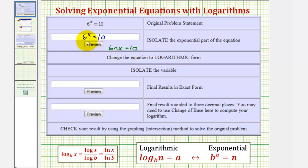Once we've isolated the exponential part, we're going to write the exponential equation as a log equation using our definition here by identifying the base, the exponent, and the number. Notice for our exponential equation, the base is 6, the exponent is x, and the number is 10.